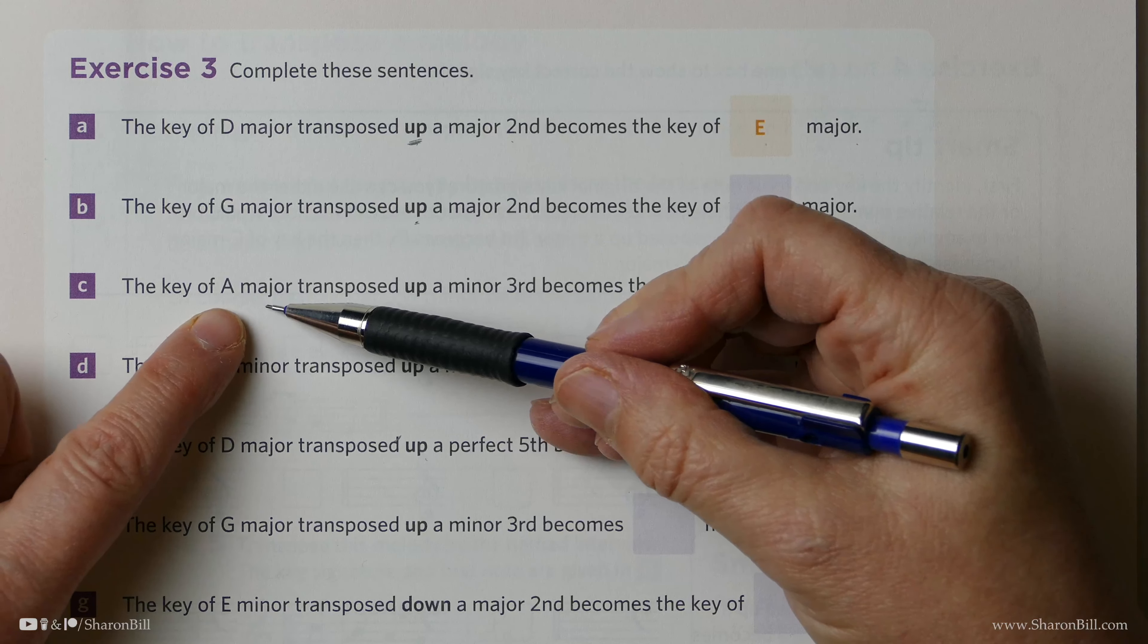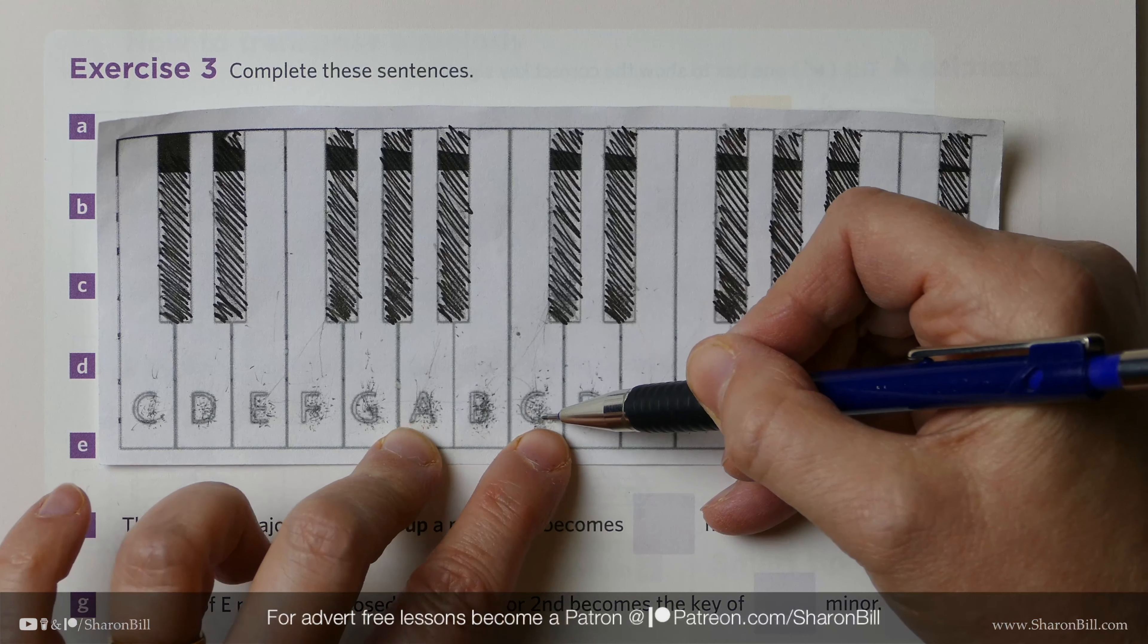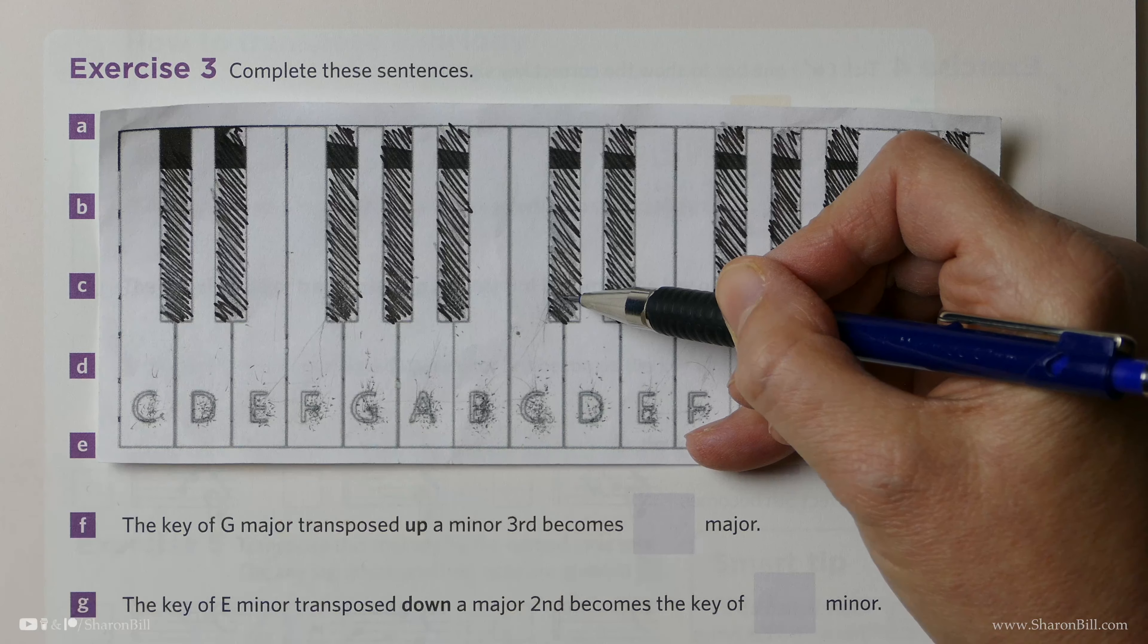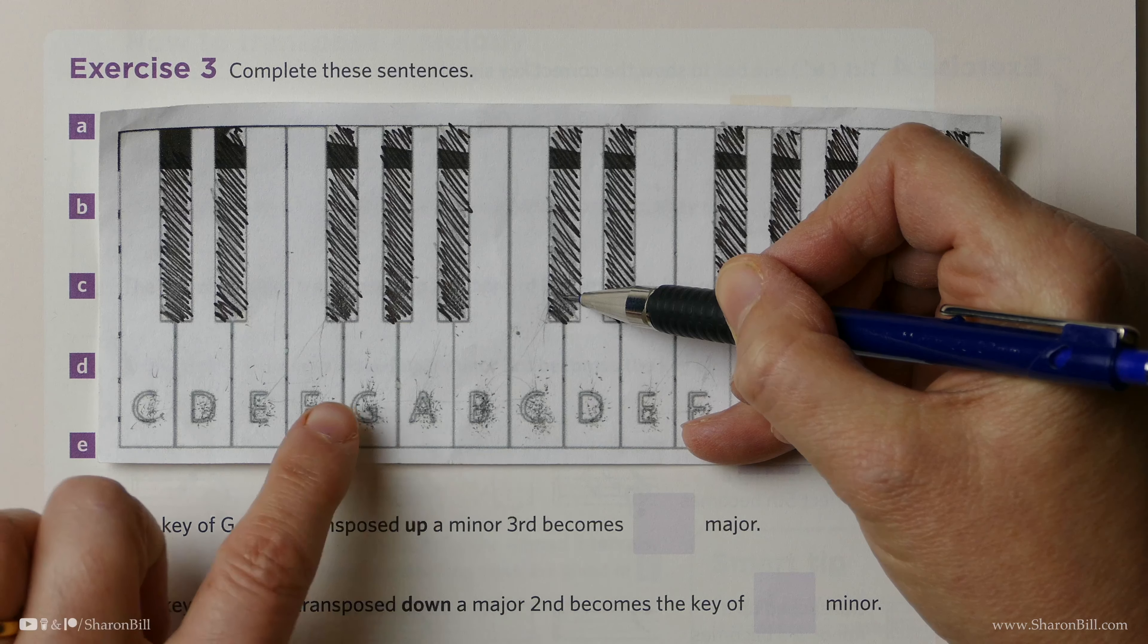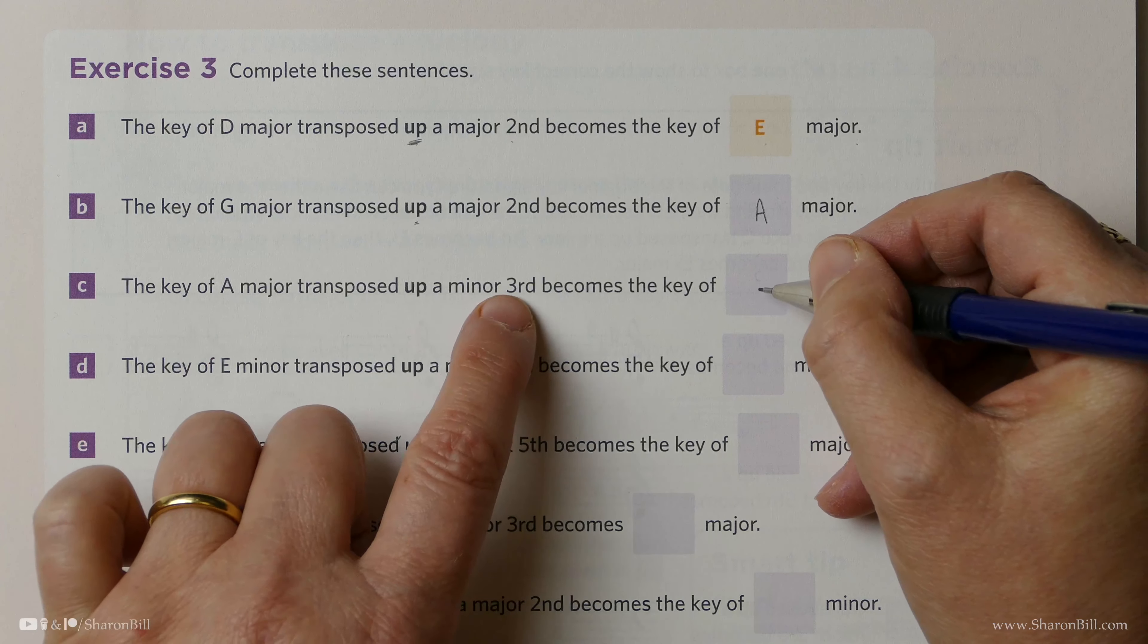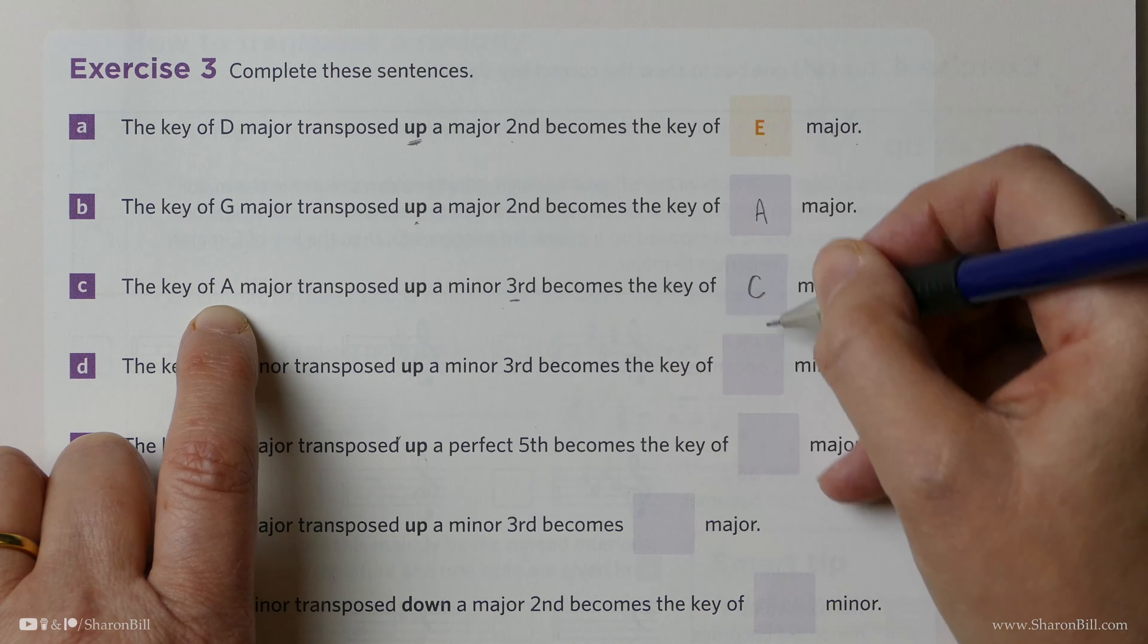So now we're in A major, and we need to transpose up a minor 3rd, so A, let's count up 3, 1, 2, 3, and that's a minor 3rd because we know that major would be a semitone greater, major means greater, and we know that A major should have C sharps in the key signature, always have your major and minor key signatures to hand. And so A to C sharp is major, A to C natural is minor, that's our interval of a minor 3rd, and so we've taken up a minor 3rd to C, and we've gone from A major to C major scale. Because it's a minor 3rd, it doesn't mean it's a minor key, that's just the distance that we've travelled to our new key.